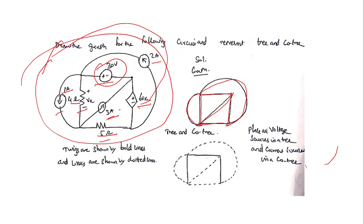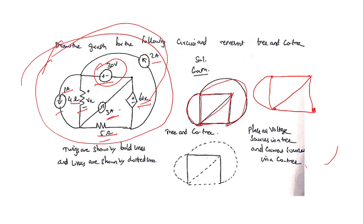Each two-terminal element is represented as a line segment to draw the graph. I will draw all four nodes. The 30 volt source is drawn as a solid line; 6Vx, 5 ohm, and 4 ohm are each replaced with a line segment. The 3 ampere source, 1 ampere source, and 2 ampere source connected between nodes are also drawn as line segments. This gives us the graph.